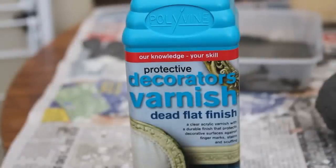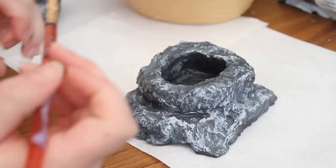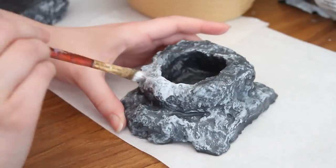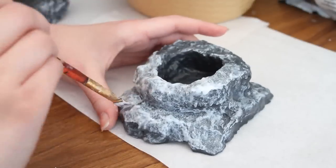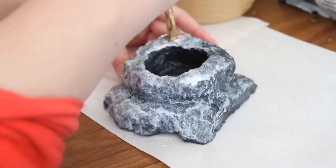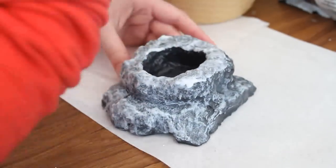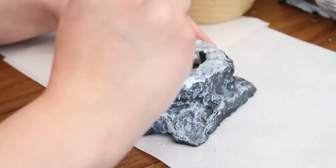Since then I've used this dead flat decorator's varnish. I'm hoping it works well—it does say it's water resistant. If you use tiles, reptile carpet, newspaper, or tissue for the substrate, you don't have to worry about this and you can go ahead and use Mod Podge. But since eco earth can be slightly damp when you first add it in, it'll be better to try out the decorator's varnish.